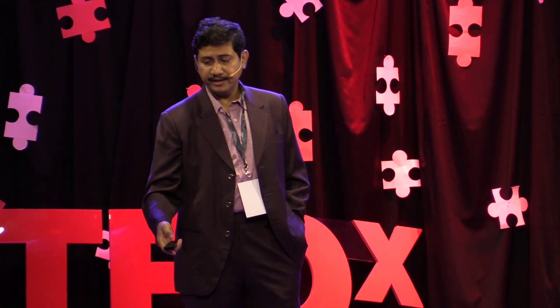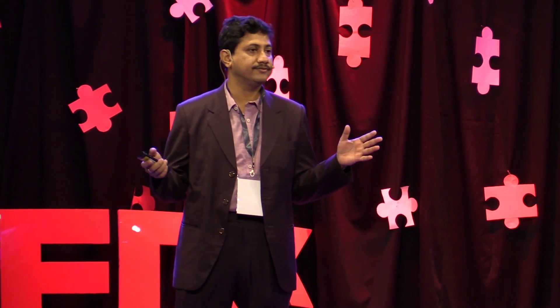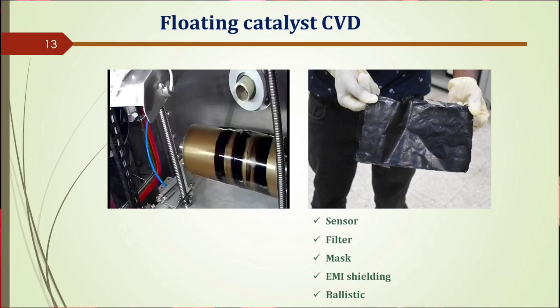Another important structure is what we have named the graphene flower — it looks like a flower under the microscope, though to the naked eye it appears as just a particle. The beauty of this structure is its very high surface area. These are vertically aligned graphene petals, and they can be used for supercapacitor applications. This is produced by floating catalyst chemical vapor deposition.